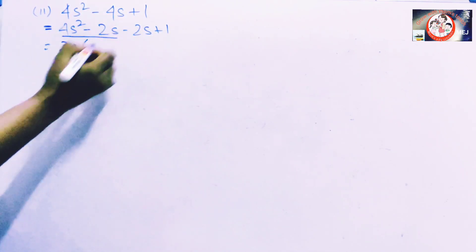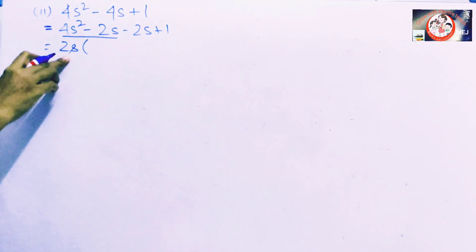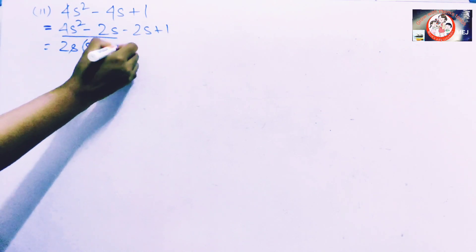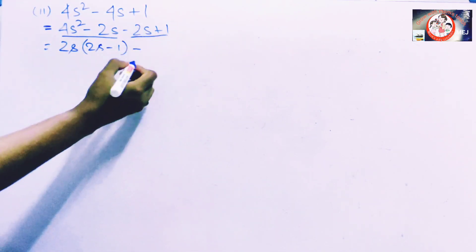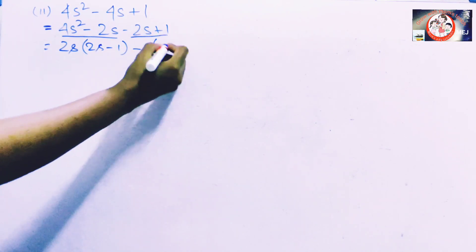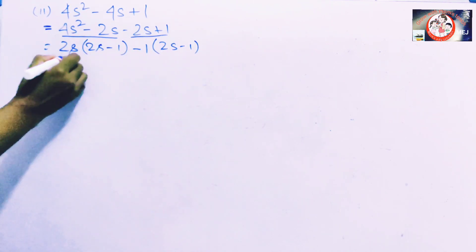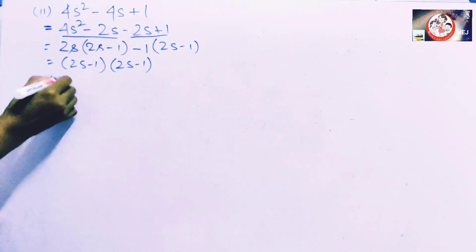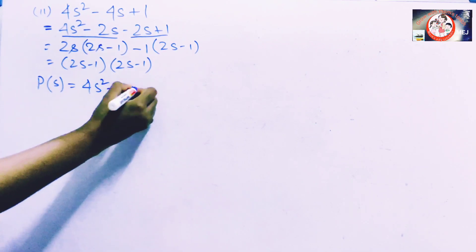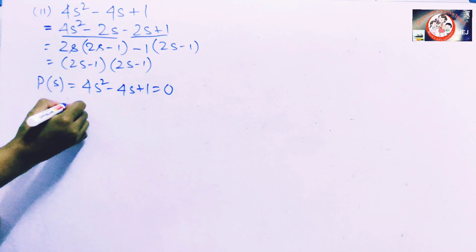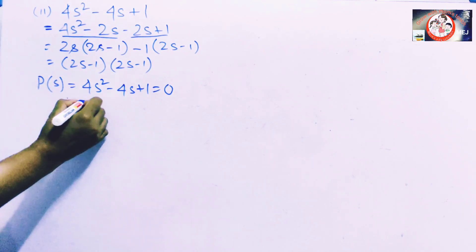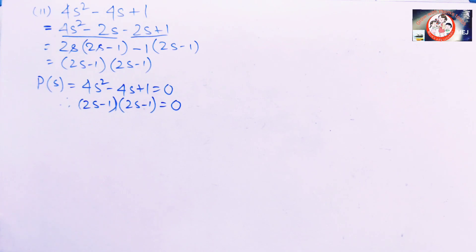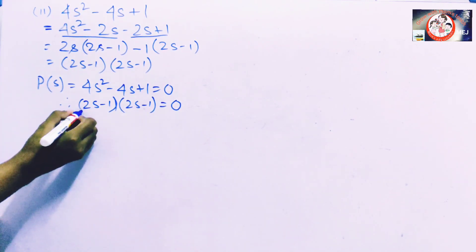From the first two terms we have taken common factor 2s, and the remaining part is 2s minus 1. From the last two terms we have taken minus 1 common, and the remaining part is 2s minus 1. So the polynomial 4s² minus 4s plus 1 equals (2s minus 1)(2s minus 1).